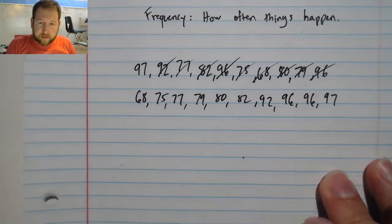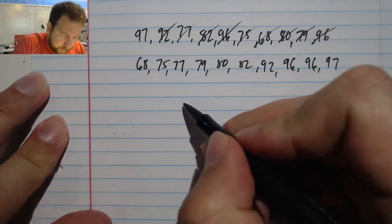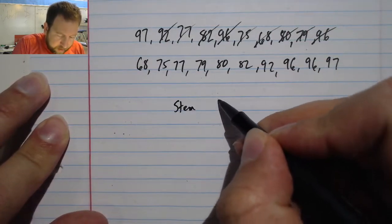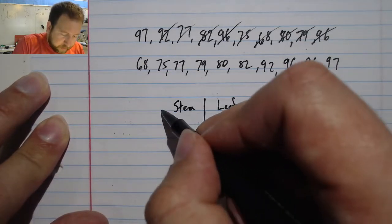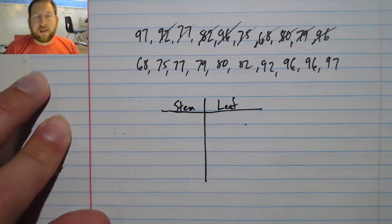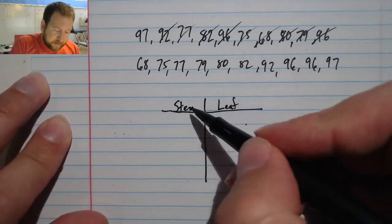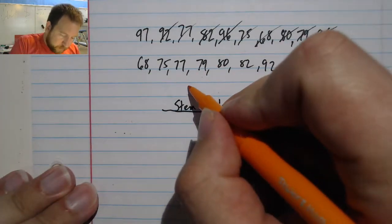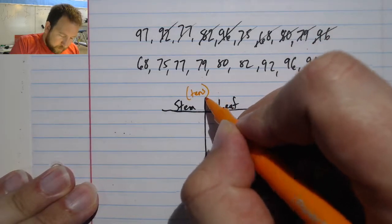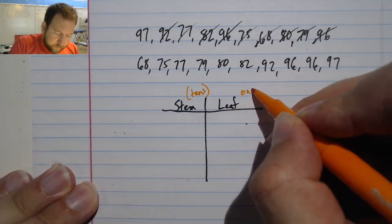And this is kind of what it looks like. I have my stem and I have my leaf. And I'm going to make a big T chart. And the big thing that we're looking at here is that my stem is going to be my number in the tens column.